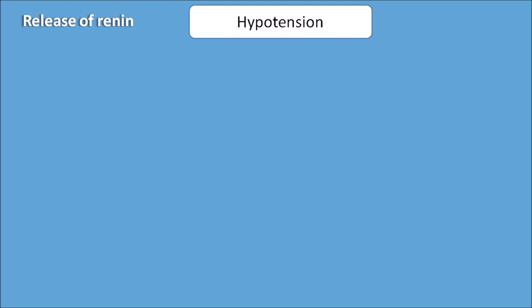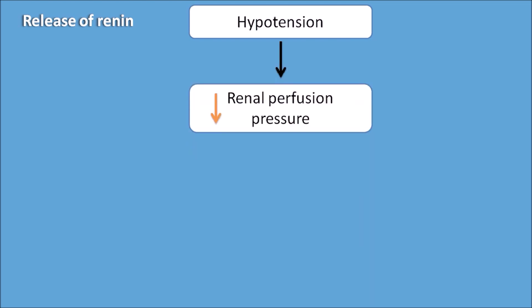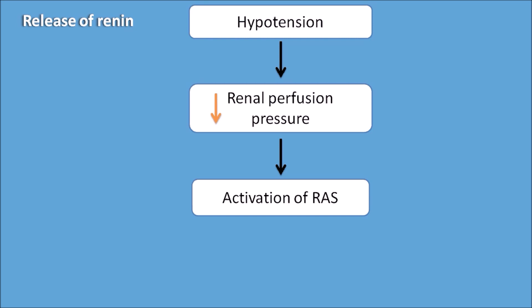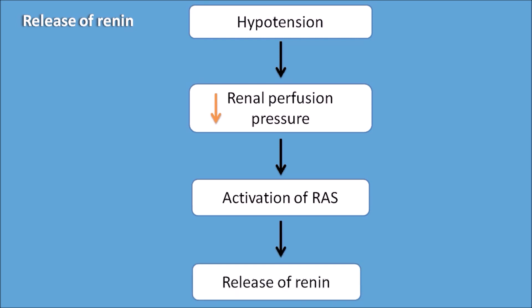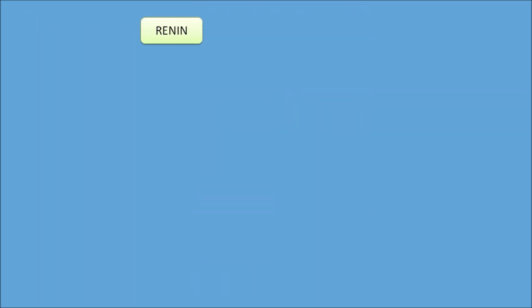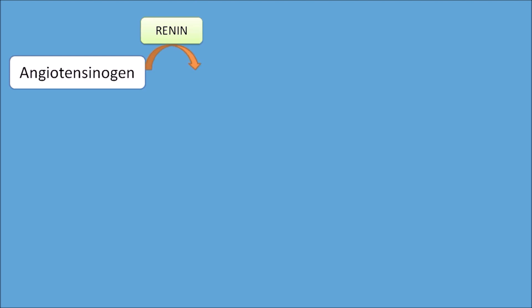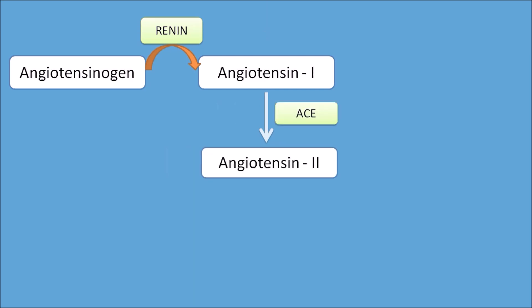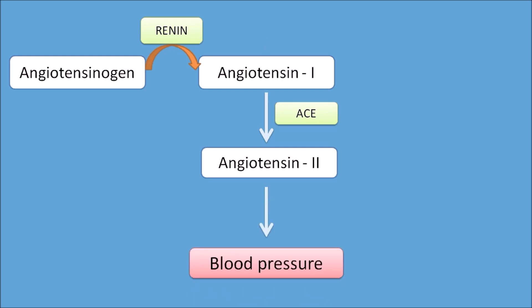First we will see how renin is released and how ACE inhibitors are involved. Renin is released under conditions like hypotension. When blood pressure decreases, it results in decreased renal perfusion pressure, which stimulates the renin-angiotensin system. This activated system releases renin, which converts angiotensinogen to angiotensin I, which is then converted to angiotensin II by the ACE enzyme — angiotensin converting enzyme.